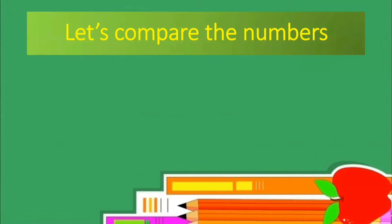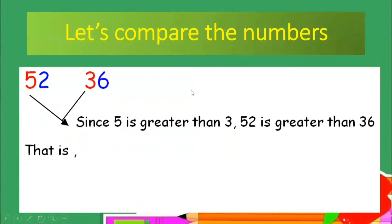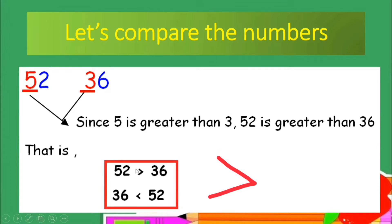Let's compare the numbers. First example: 52 and 36. How will we know which symbol to use? First, you have to look at the first digit of each number. We have five and three — which one is greater? Greater means bigger. Five is greater than three, so therefore 52 is greater than 36.